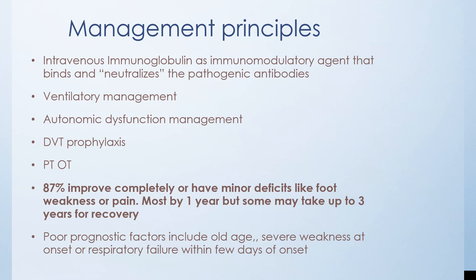Most cases have CSF cell count of less than five cells, but in around 10 to 50% of cases it may be up to 50. On MRI of the spine, cauda equina root enhancement is sometimes seen — remember GBS is also a polyradiculopathy. Management principles include intravenous immunoglobulin as immunomodulatory agents that bind and neutralize pathogenic antibodies, ventilatory management, DVT prophylaxis, physical therapy, and occupational therapy.